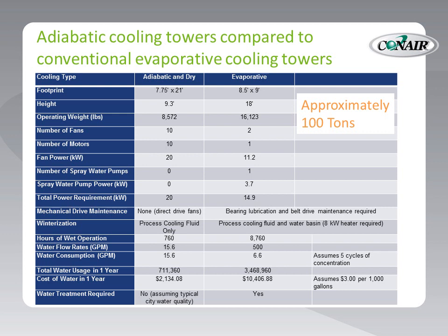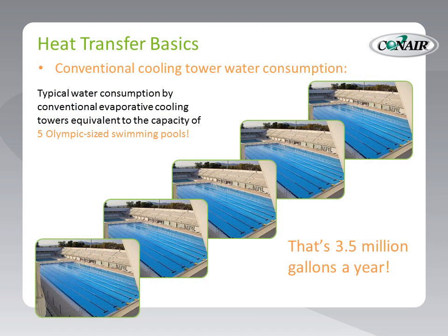Evaporative cooling towers are typically much taller, weigh a bit more, and require much more maintenance than an adiabatic cooler. But importantly, note the water usage differences. 3.5 million gallons of water will be used by the evaporative cooling tower. What does 3.5 million gallons look like? It looks like this — five Olympic-sized swimming pools full of water will be evaporated over the course of one year.